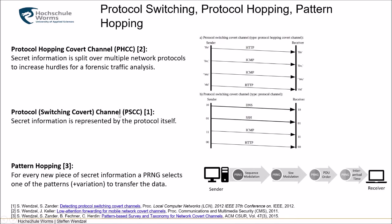The protocol channel — sometimes called protocol switching covert channel, though that term is problematic since protocol hopping is also a type — works differently. Here, we do not embed information in the packets themselves using reserved bits or similar. Instead, we let the protocol itself represent the hidden information. If a DNS packet arrives, it could represent binary '10'; an SSH packet could be '01'. So with four protocols, we can encode two bits per protocol transmission, transferring a secret message this way.